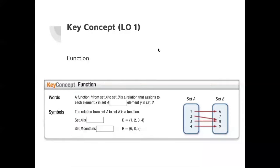Let's cover some key concepts that you must know. We're first going to learn what a function is. A function f from set A to set B is a relation that assigns to each element x in set A exactly one element y in set B. What this is saying is each element x in set A should match to exactly one y.